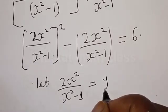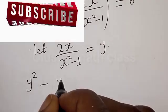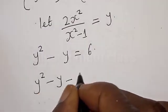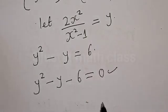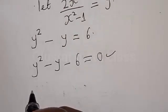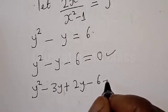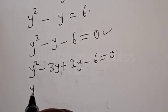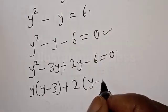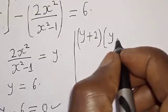Let 2s squared divided by (s squared minus 1) equal y. Therefore we have y squared minus y is equal to 6, then we have y squared minus y minus 6 is equal to 0. This is a quadratic equation. Let's solve by the factorization method — we look for two numbers whose product gives minus 6. We get: y squared minus 3y plus 2y minus 6 equals 0, then y(y minus 3) plus 2(y minus 3) equals 0.